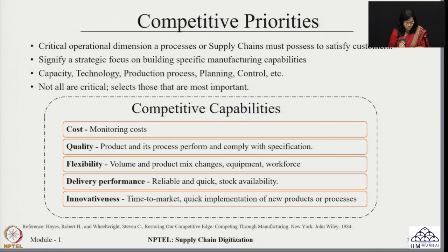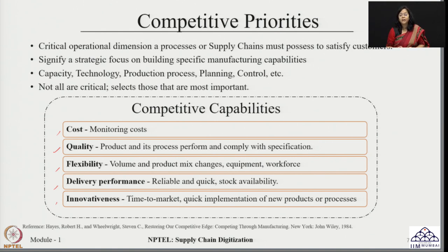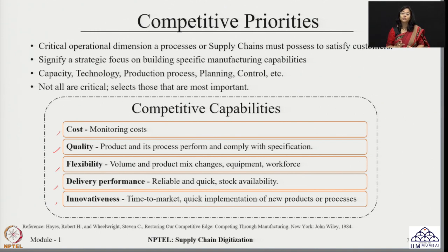The competitive capabilities that can be developed include cost, quality, flexibility, delivery, and innovativeness. Cost is about ensuring that the cost incurred at every step — whether in supply chain, manufacturing, or any other process — is monitored closely, with the focus on offering the product at the minimal possible cost so that a low pricing strategy can be followed. Quality is another competitive capability where all products and processes are ensured to comply with specifications so that quality norms are achieved and the product is accepted because of the quality being offered.